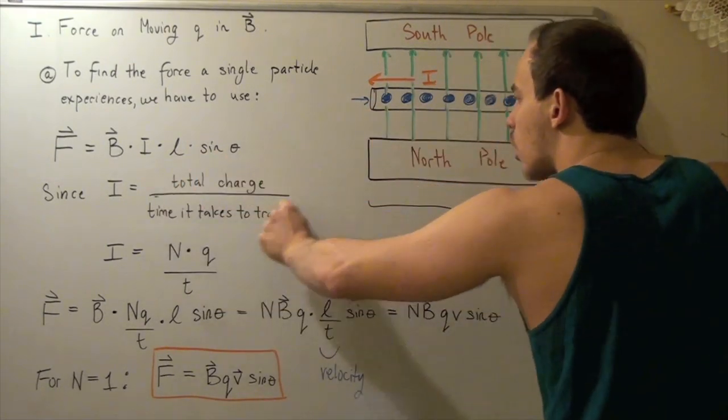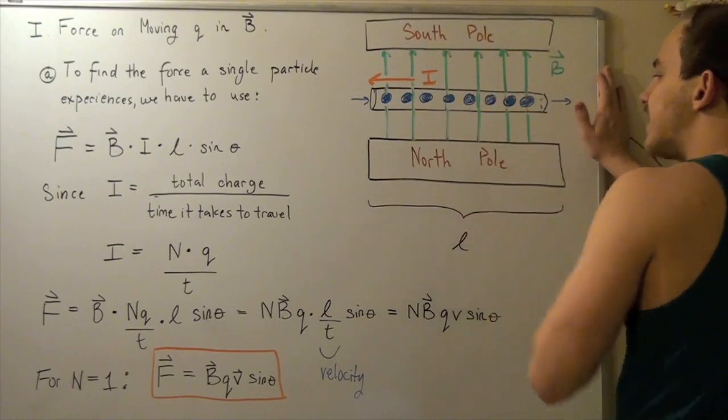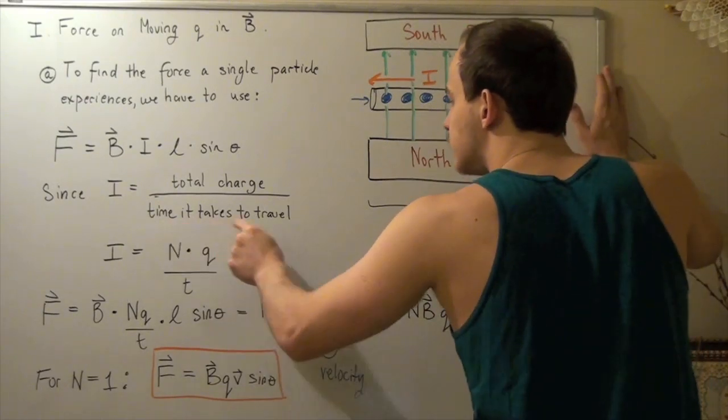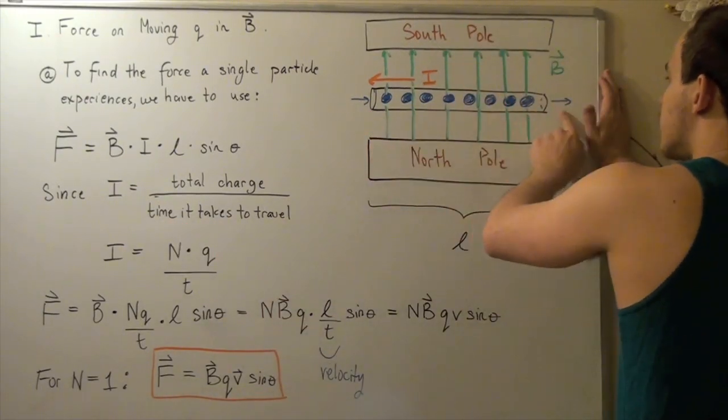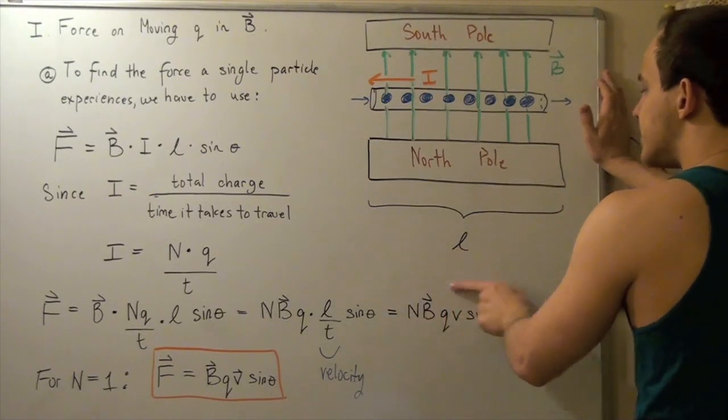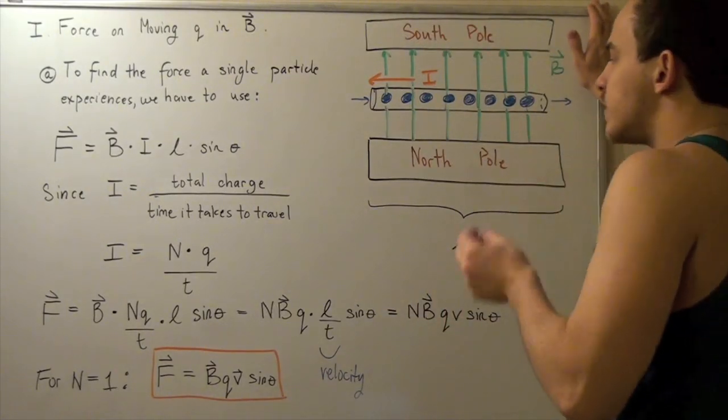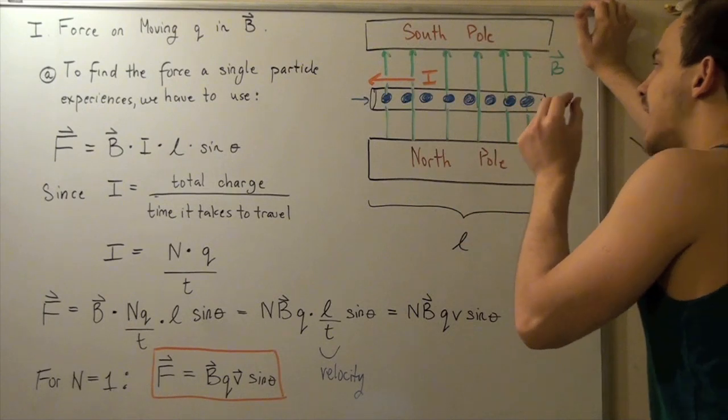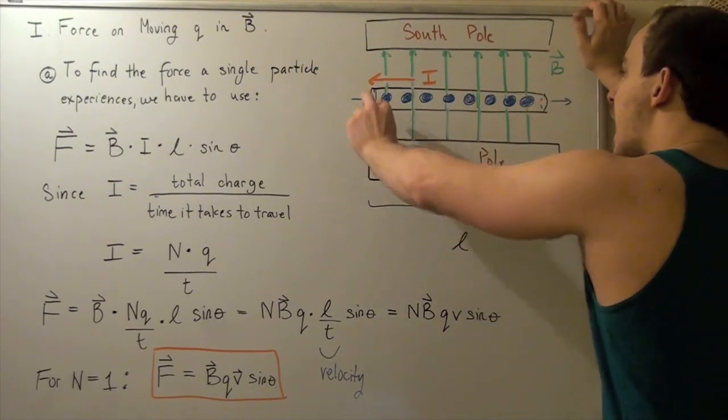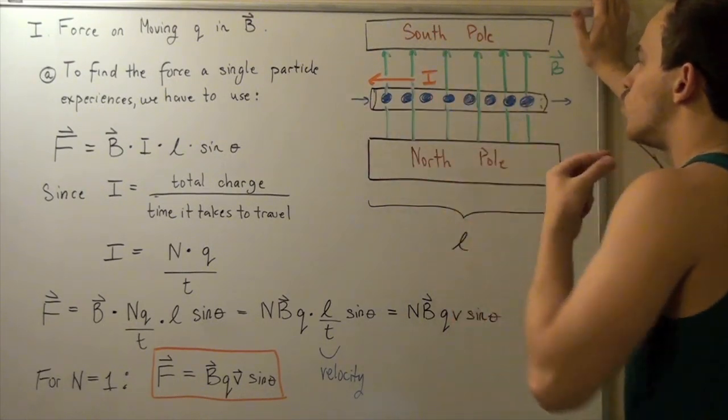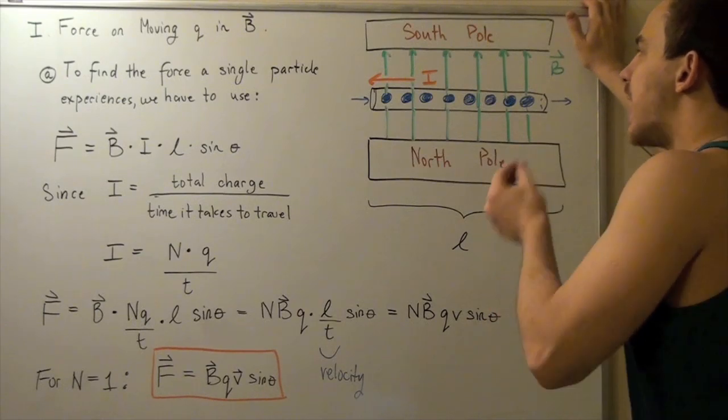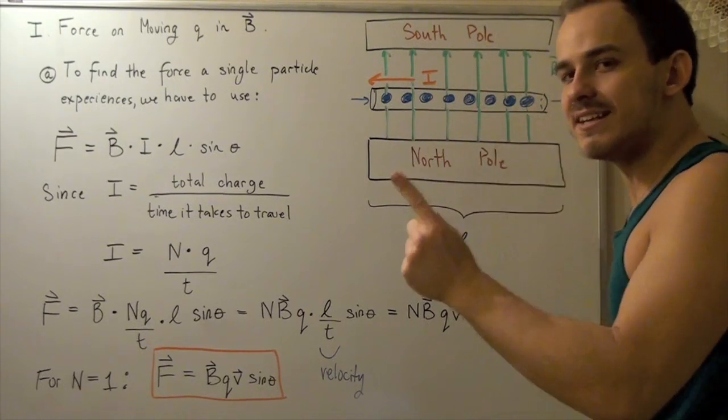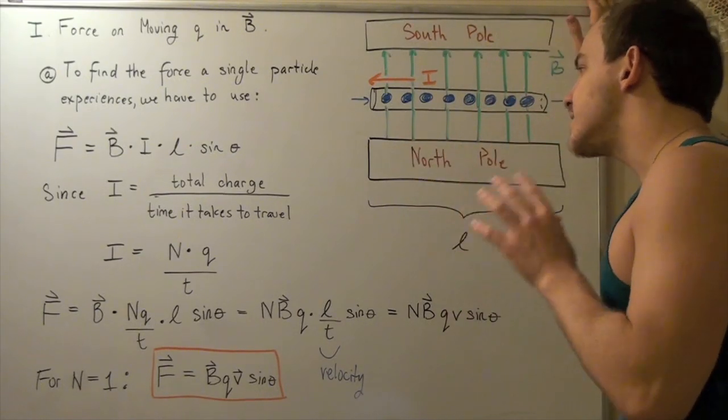In other words, the total charge that is on these eight electrons divided by the time it takes them to travel from this point to this point, which is a distance L. And I want to ask the following question. If our magnet is capable of exerting a force on all these electrons at once, can this magnet exert a force on a single electron? And the answer is yes.